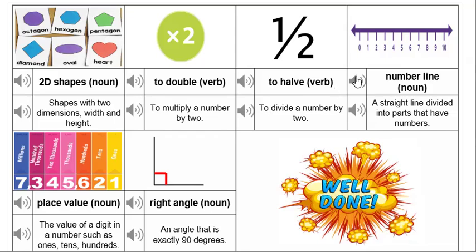Number lines. A straight line divided into parts that have numbers.